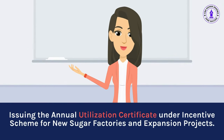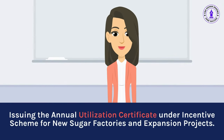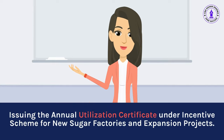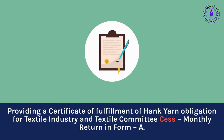Certifying the annual utilization certificate under the Incentive Scheme for new sugar factories and expansion projects. Providing the Certificate of Fulfillment of Hank Yarn Obligation for the Textile Industry and Textile Committee's Monthly Return in Form A.